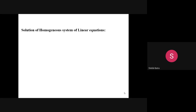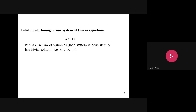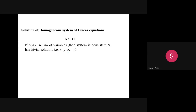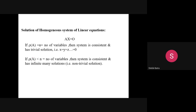In last class we covered the solution of homogeneous system of linear equations, given by Ax = 0. If the rank of the coefficient matrix equals the number of variables, the system is consistent and has only the trivial solution x=0, y=0, z=0. If the rank is less than the number of variables, the system is consistent and has infinitely many solutions, or a non-trivial solution. A homogeneous system is always consistent.